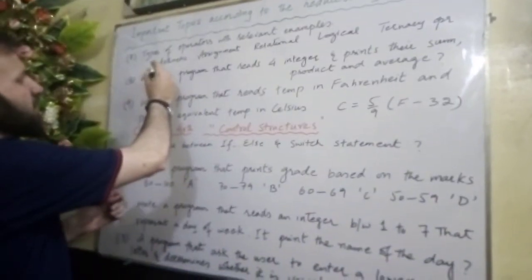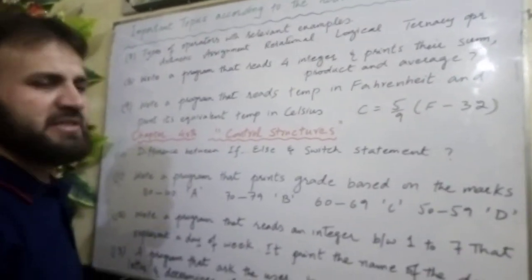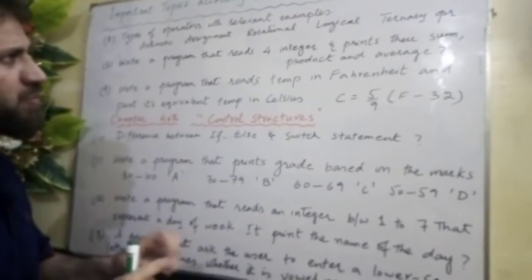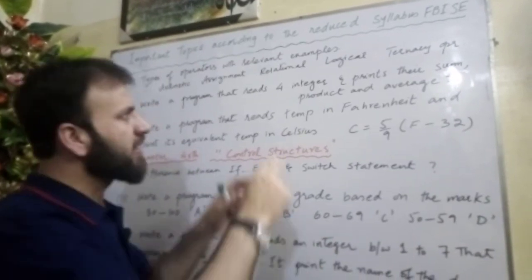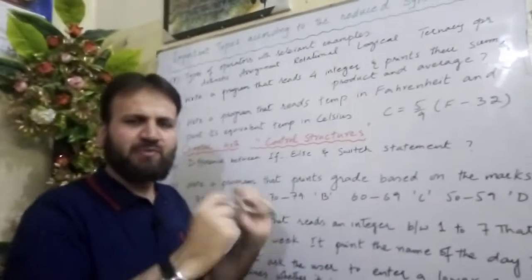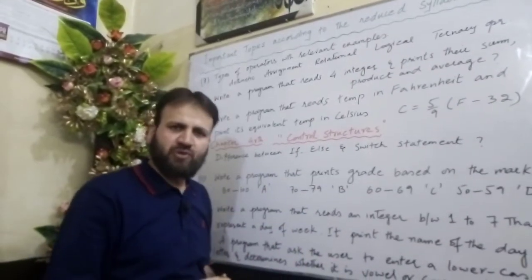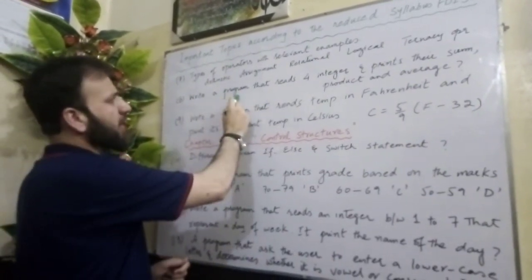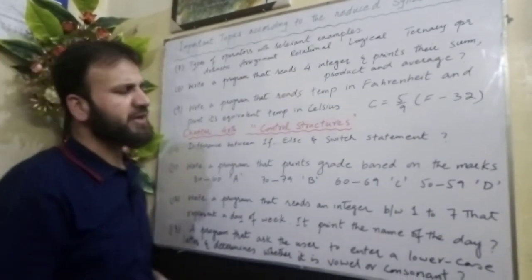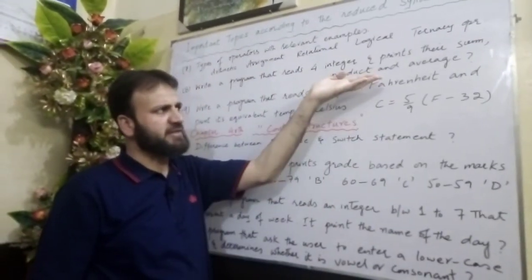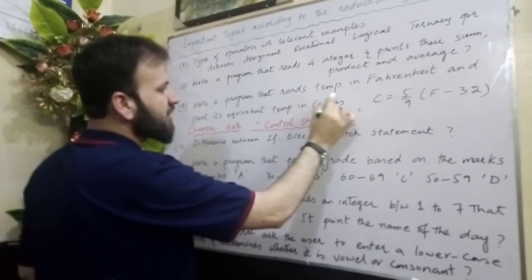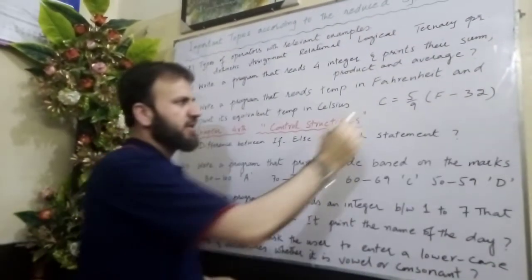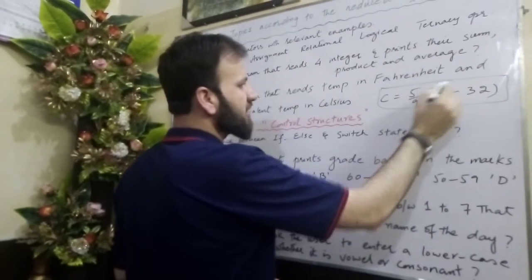Question seven: what are the types of operators with relevant examples? In programming, operator types include arithmetic operators, assignment operators, relational operators, logical operators, and ternary operators. You must know their definitions and examples, including the power operator and exclusive OR. The ternary operator with relevant examples is very important. Also, write a program that reads four integers and prints their sum, product, and average. And write a program that reads temperature in Fahrenheit and prints its equivalent temperature in Celsius.